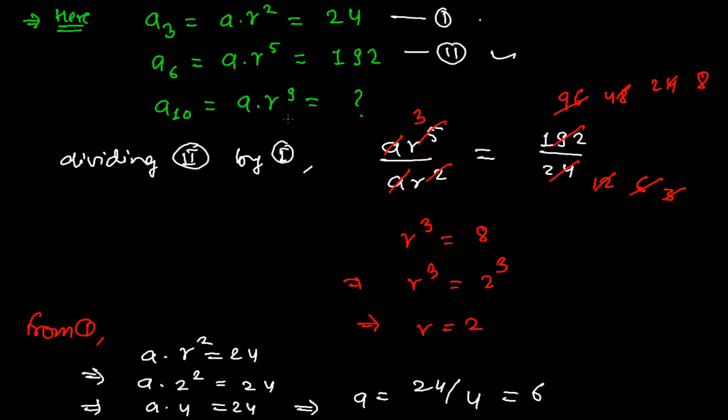Now we need to find out the tenth value. So it will be 6, that is a, we recently found out. And then r we recently found out is 2. So 2 to the power 9. So it will be 6 times 2 to the power 9, that's 512.